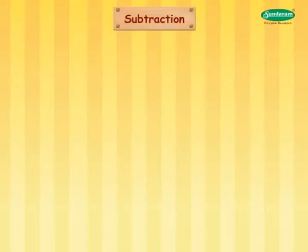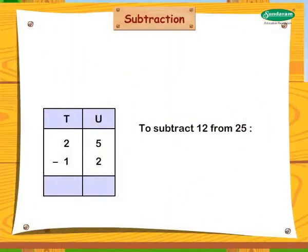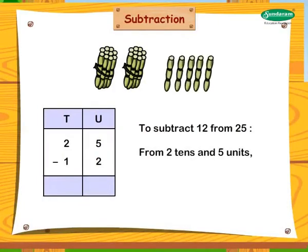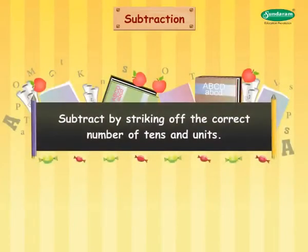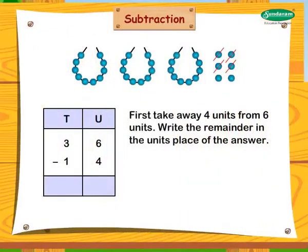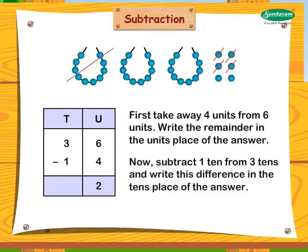To subtract twelve from twenty-five: from two tens and five units, take away one ten and two units. Subtracting by striking off the correct number of tens and units. First, take away four units from six units and write the remainder in the units place of the answer. Now subtract one ten from three tens and write this difference in the tens place of the answer.